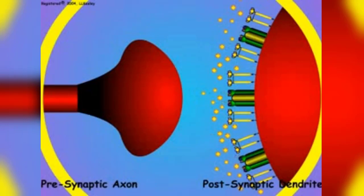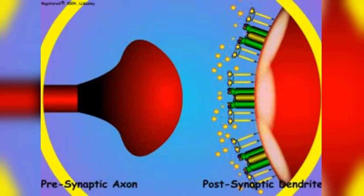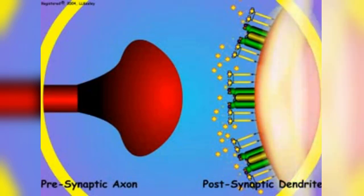The neurotransmitter chemicals bind to the receptor proteins associated with the sodium channels of the postsynaptic membrane. Receptor binding of the neurotransmitter chemical stimulates the sodium channels to open and allows positive sodium ions to flow into the postsynaptic dendrite.